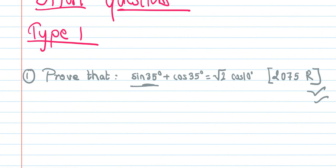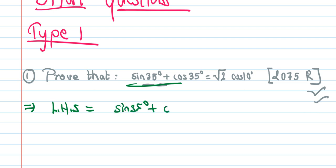Prove that sin35° + cos35° is equal to √2·cos10°. LHS equals sin35° + cos35°.